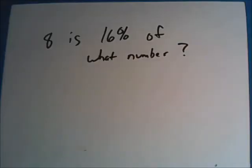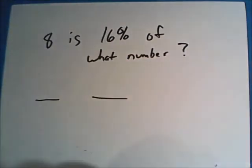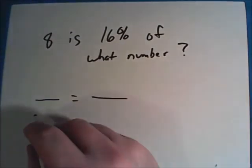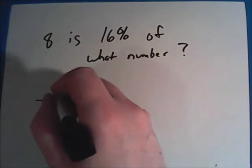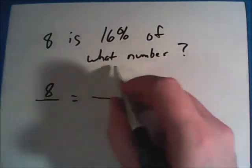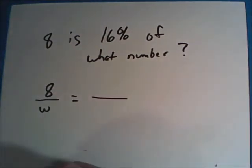Here is the last of the percentage problems. You're asked 8 is 16% of what number. So here we have to find that whole amount. So I recommend setting this up as a ratio with one fraction being equal to another fraction. So the part we're looking at is 8. And we don't know what the number is that 8 is a part of. So I'll just put in W to represent the whole amount.